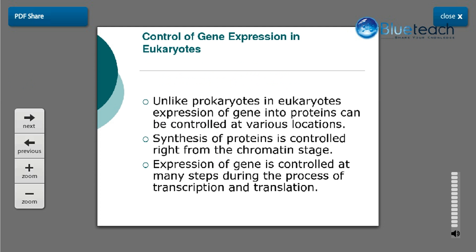Unlike prokaryotes, in eukaryotes, expression of gene into proteins can be controlled at various locations. Synthesis of proteins is controlled right from the chromatin stage, and expression of gene is controlled at many steps during the process of transcription and translation.